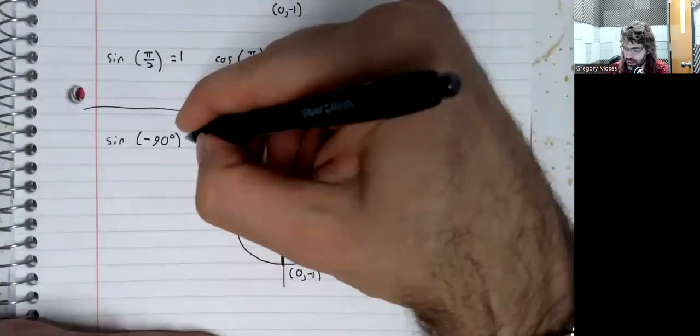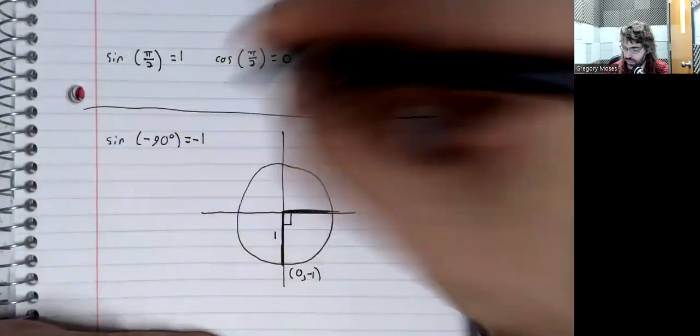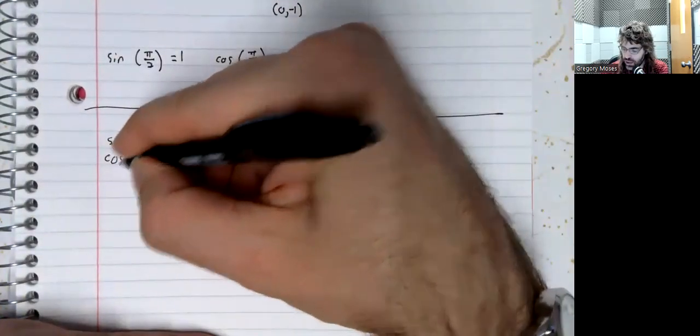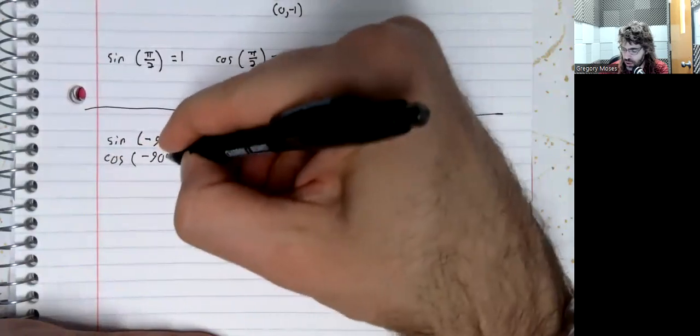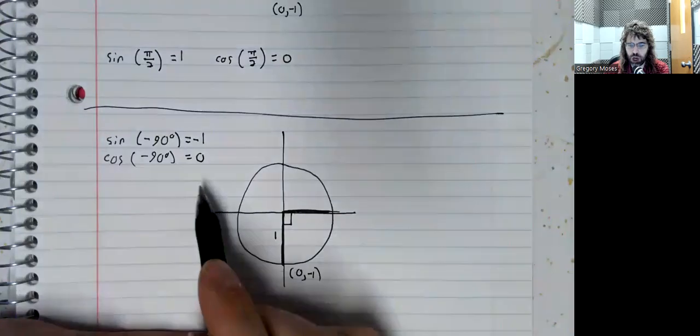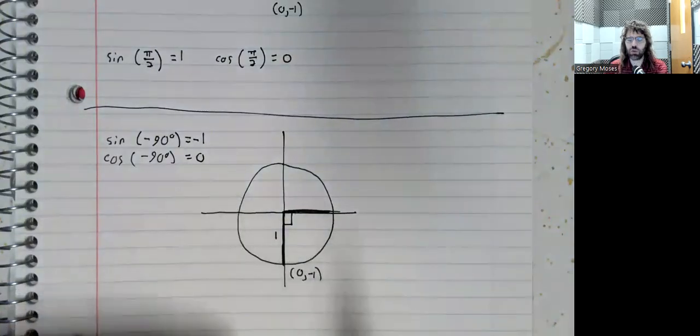And the sine is the y-coordinate, negative 1. If we wanted the cosine of this angle, 0, the x-coordinate.